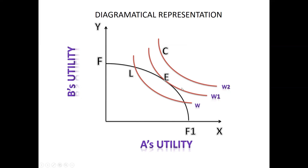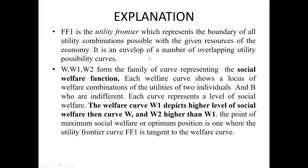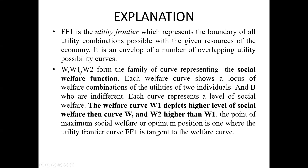In the diagram you can see FF1 and three curves W, W1, and W2. On the Y-axis we have person B's utility and on the X-axis we have person A's utility. FF1 is the utility frontier, which represents the boundary of all utility combinations possible with the given resources of the economy. It is an envelope of a number of overlapping utility possibilities curves.